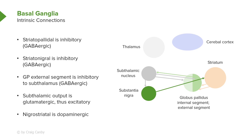The last connection to consider is between the substantia nigra and the striatum. This connection is dopaminergic, meaning dopamine is the neurotransmitter.